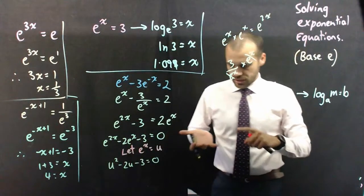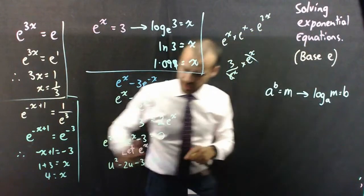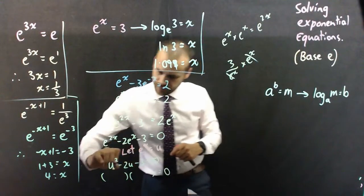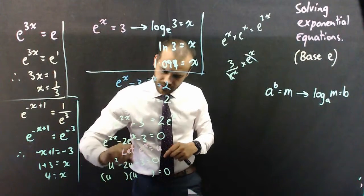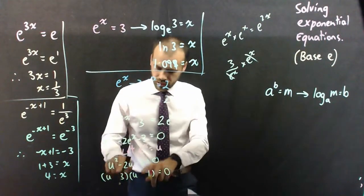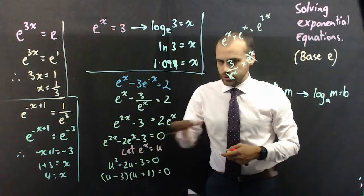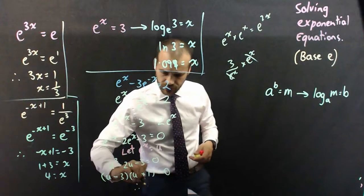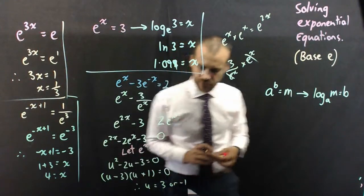Now, you could solve that using a quadratic formula, using completing the square. I'm just going to factorize it, because it's like a monic. So, I've got uu, it's going to be like 3 and 1 here, and one of those will have to be negative, it's going to be that one. So, u minus 3, or u plus 1 equals 0. Using my null factor law, I can say, therefore, u equals 3 or negative 1.